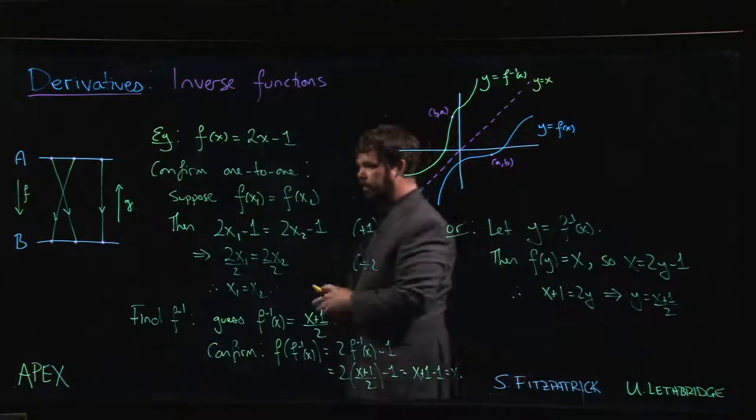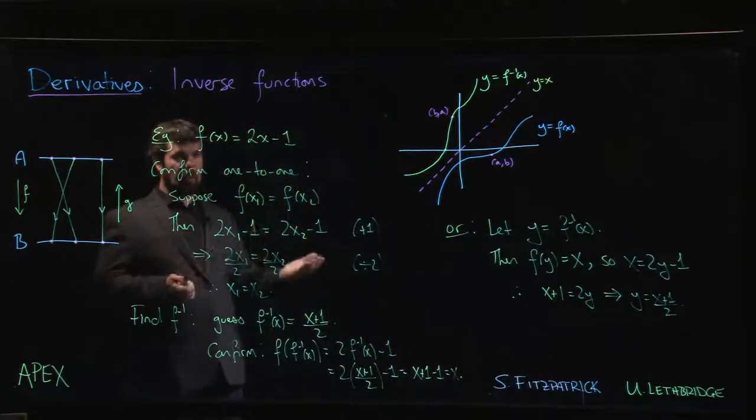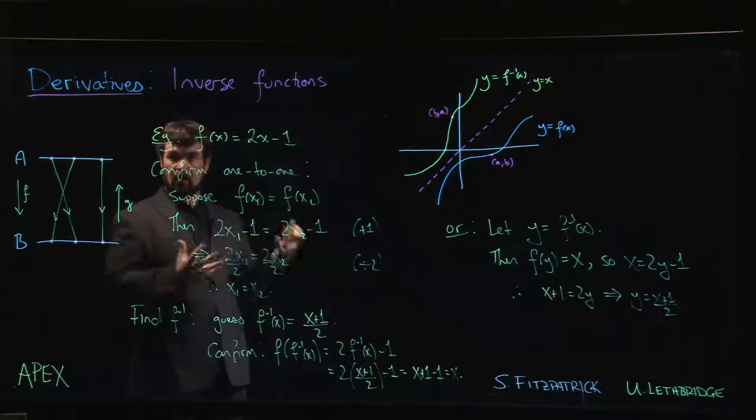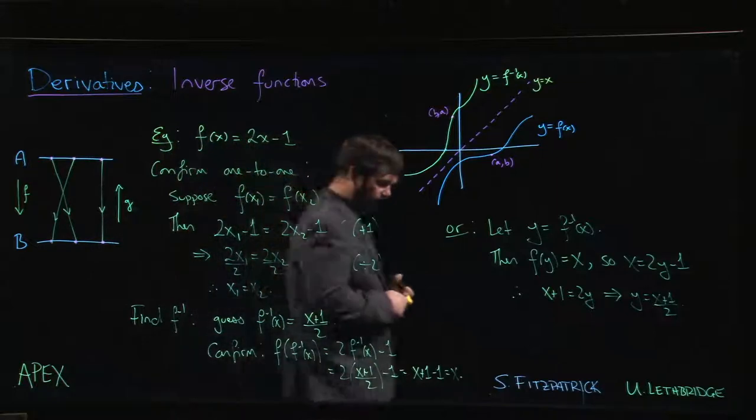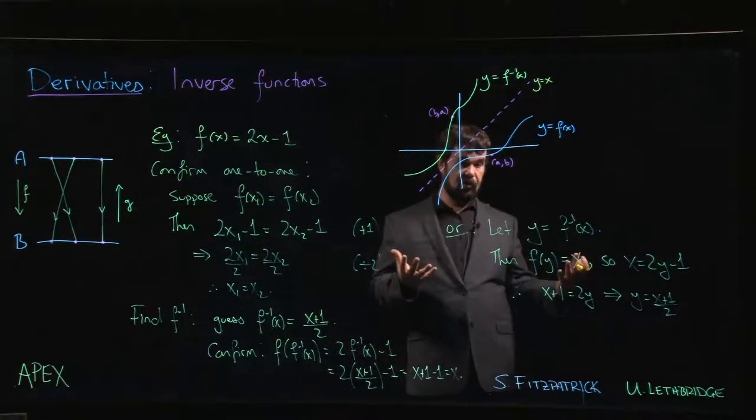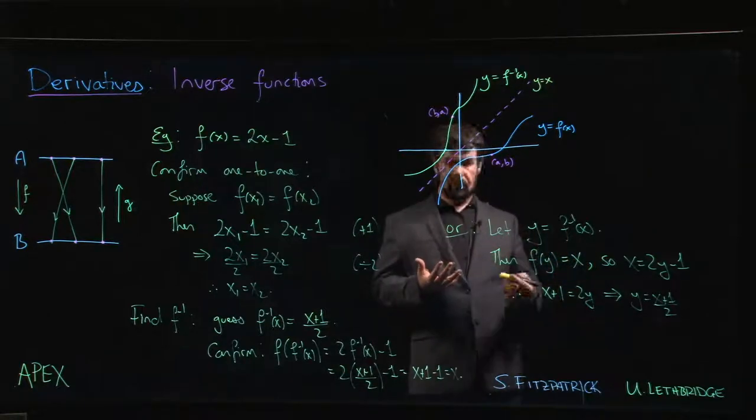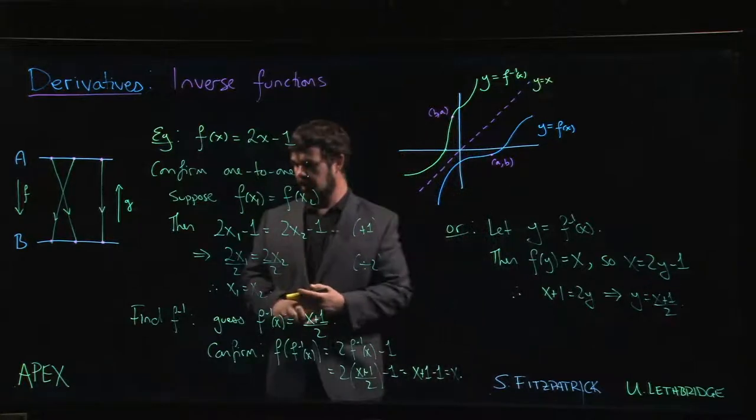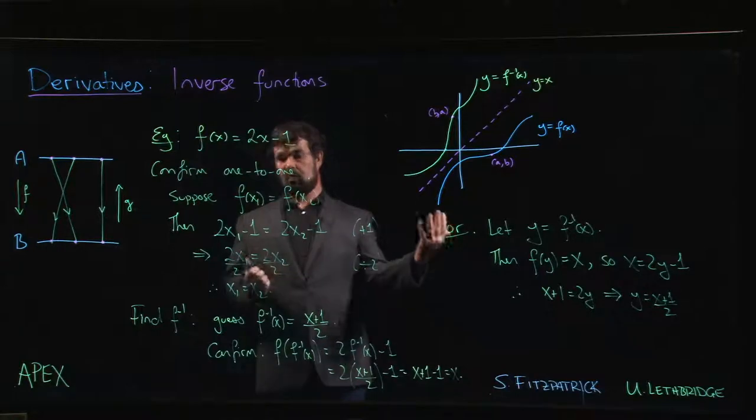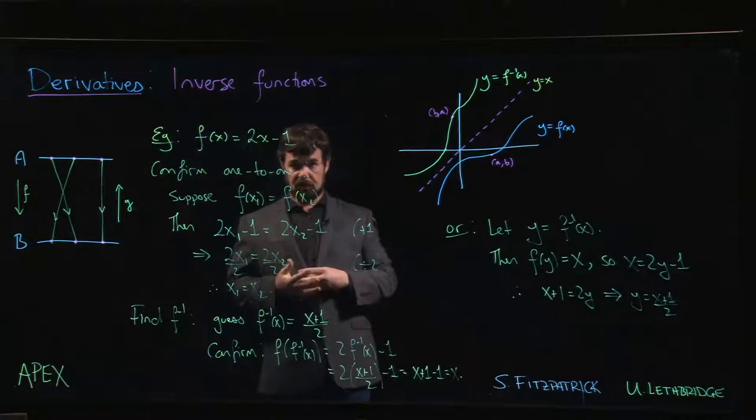Alright? So you have this systematic way of tracking down the answer. So if somebody hands you a function, you're pretty sure that it's one-to-one—and by the way, once we talk about derivatives and what they tell you about properties of graphs and behavior of graphs, we're going to have some other tools at our disposal to understand how things work, where the derivative is one way we'll be able to confirm that a function is one-to-one. So there will be several tools at our disposal to confirm that a function is one-to-one. Once we know that, this is one method that you could use to track down an inverse.